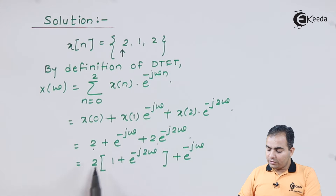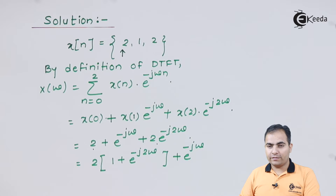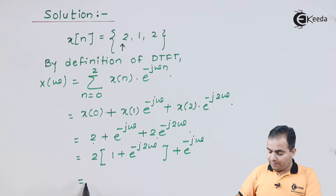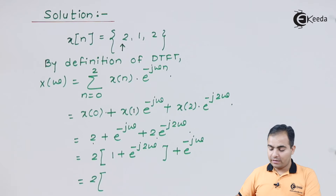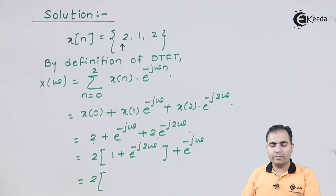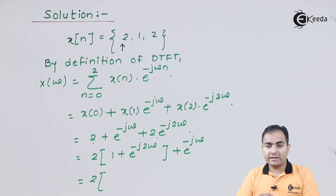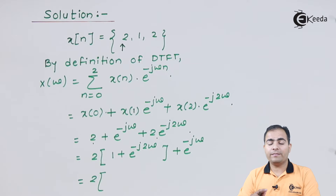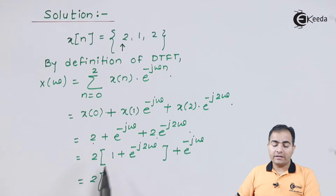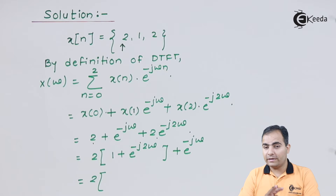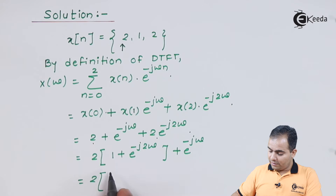I want to replace the bracket in terms of cosine. We can write e to the power minus j 2 omega as e to the power minus j omega times e to the power minus j omega, since when bases are the same the exponents add. Similarly, e to the power minus j omega times e to the power plus j omega gives e to the power 0 which is 1.